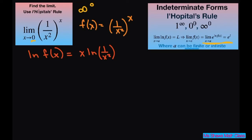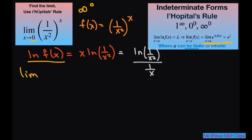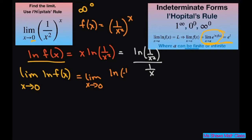To write it in a form where I can use L'Hôpital's rule, this is going to equal ln of 1 divided by x squared, divided by 1 divided by x. So now we're going to take the limit of ln of f of x as x approaches zero, because that's what we need to find to do our formula. This form will be infinity over infinity, and I can apply L'Hôpital's rule.